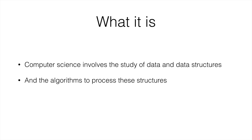Computer science is a science that involves the study of data and data structures, and also how to process them. We process data and data structures by using algorithms, which is just like a recipe, as we will see in a couple of lectures' time.